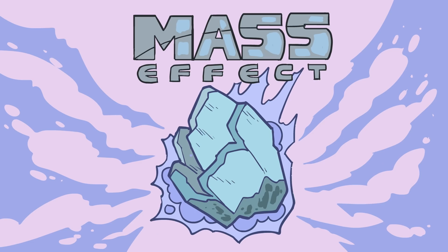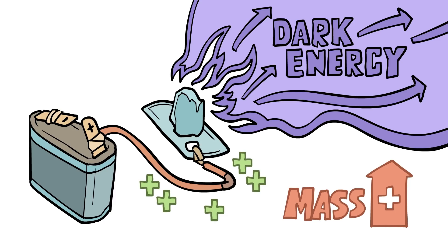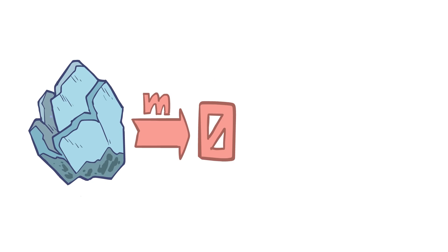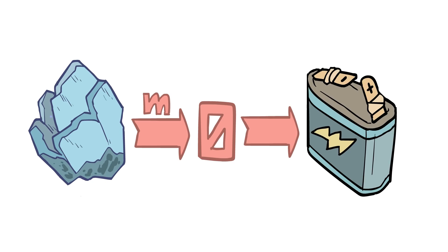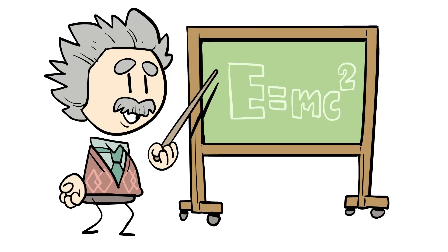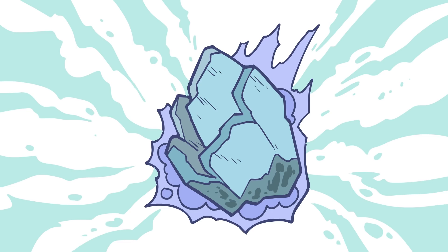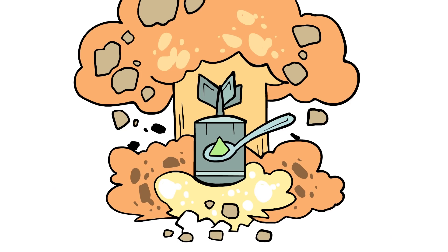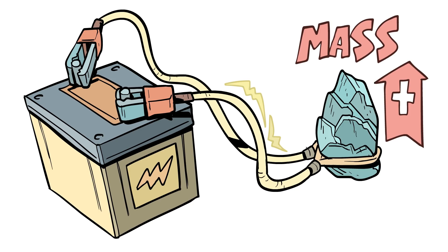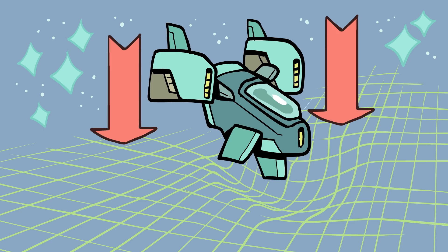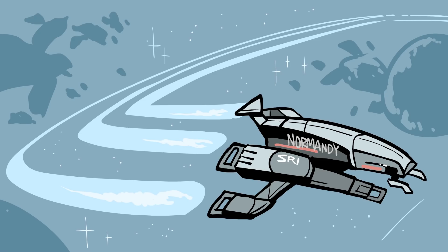Pausing the physics lesson for just a second and jumping back into Mass Effect — how does Element Zero channel dark energy to simulate an increase or decrease of mass? Well, if you don't have a mass, you could, in theory, use an equivalent amount of energy. You may have heard of Einstein's equation, E equals MC squared — that means all mass contains a huge amount of energy. For instance, the hydrogen bomb is the release of all the energy stored in only a teaspoon of matter. So if you had a lot of energy, you could use that to simulate mass and warp spacetime as if mass was there. And that's exactly what Ezo does when a current is run through it.